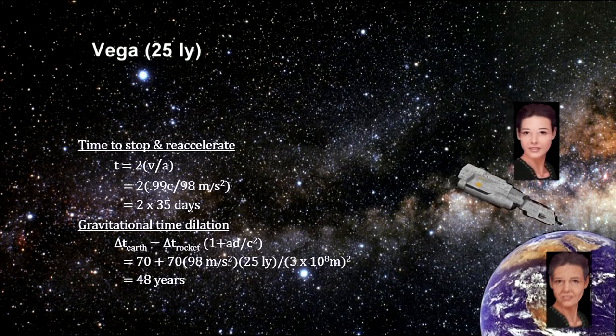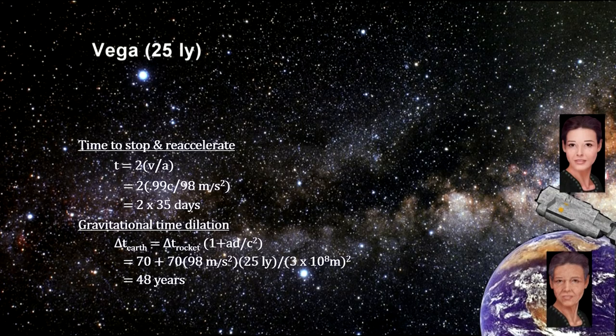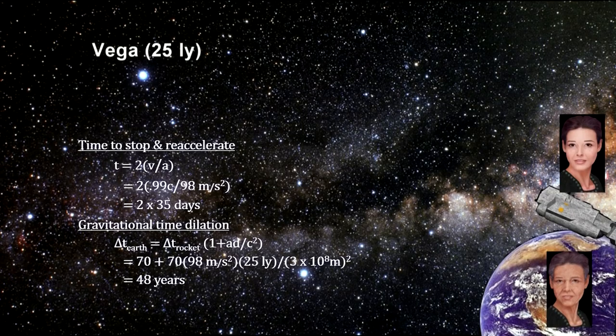So instead of both twins thinking the others should be younger, they both agree that the twin on the rocket to Vega and back is younger. No contradiction is involved, and the paradox is resolved.